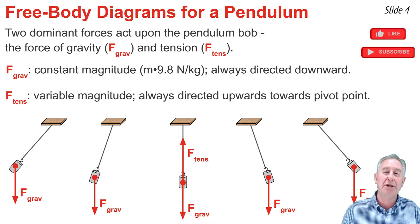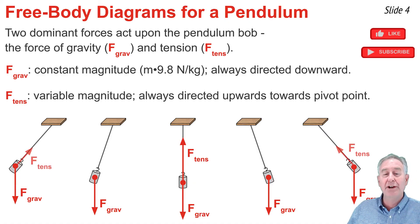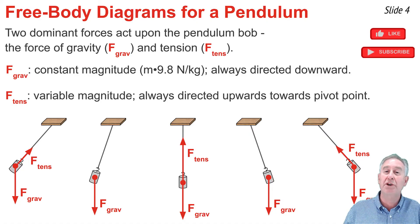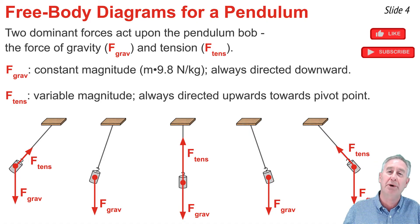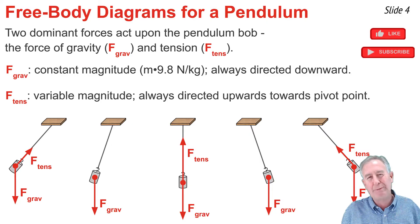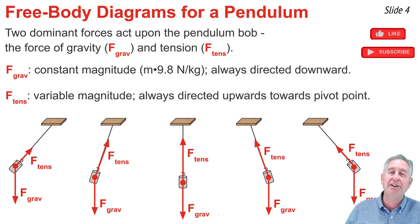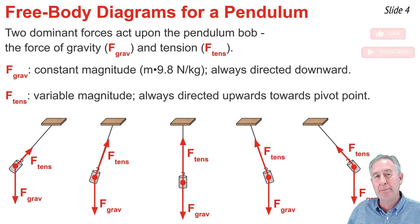Now we'll do the two extreme positions — extreme left and extreme right. You'll notice the tension force goes along the string directed upwards towards the pivot point, labeled F-tension. The size here is again a little different than it was in the middle — we'll talk more about that later. Finally, here are the last two positions for the free body diagram of a pendulum bob.